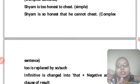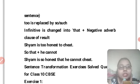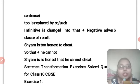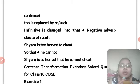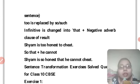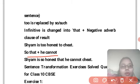So the rule is: 'too' is replaced by 'so' and 'such', and the infinitive is changed into 'that' plus a negative adverb clause of result. We use 'so' and 'such', then add 'that' and a negative clause — for example, 'he cannot'. So the transformation gives: 'so honest that he cannot cheat.'